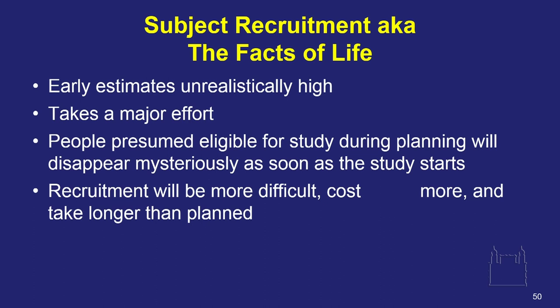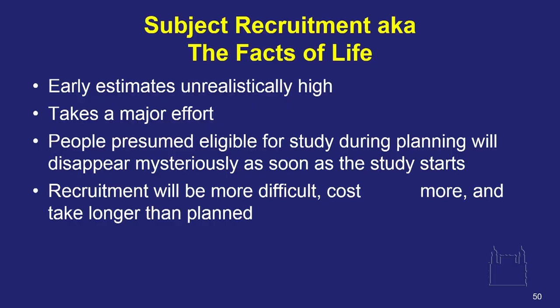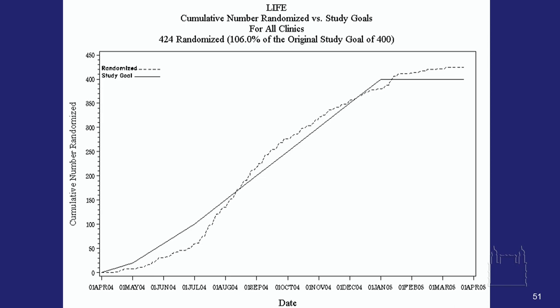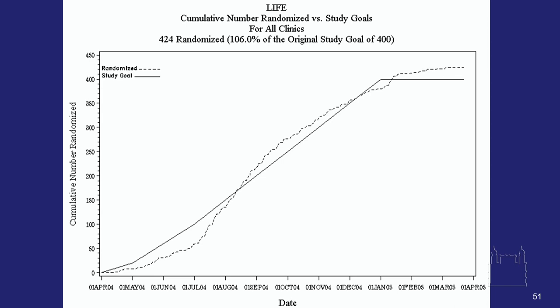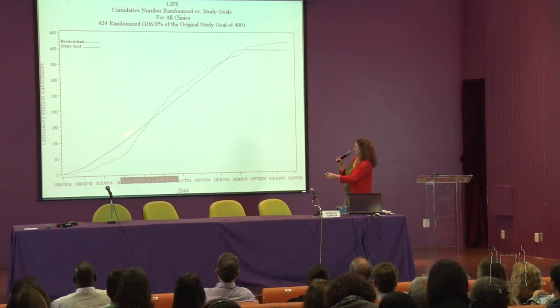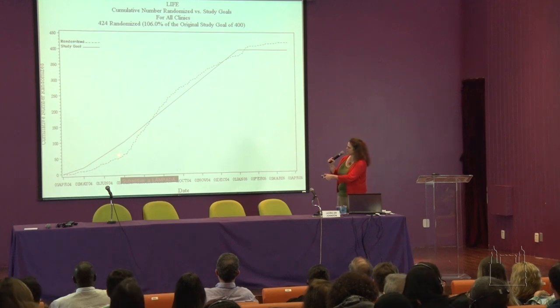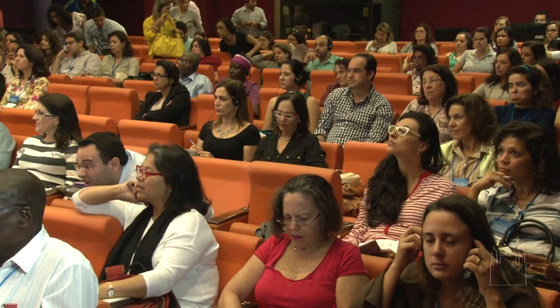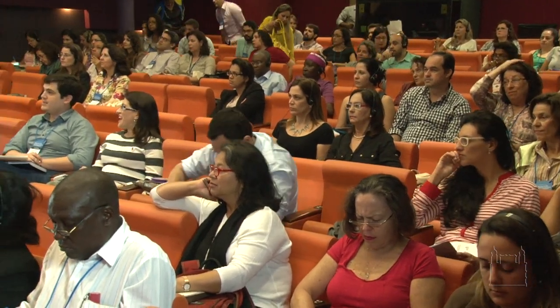This is the LIFE study — a study done at the NIH. Starting April 1st, 2004, they were starting a little slow. The solid line is what they were supposed to do, and the dashed line is what they did. By July, the folks at the NIH were saying, 'We may have to shut you down. What's going on? You're not recruiting. You're way below where you're supposed to be.' They were supposed to recruit for only a year with a long-term follow-up.